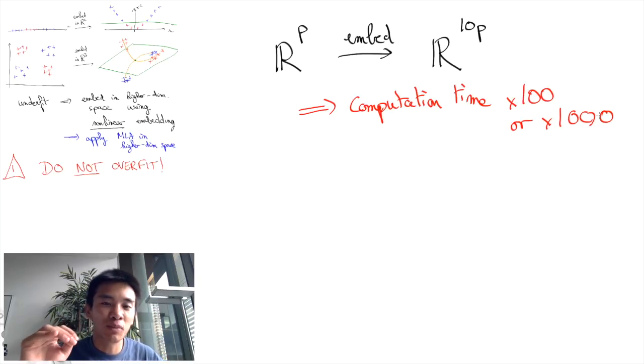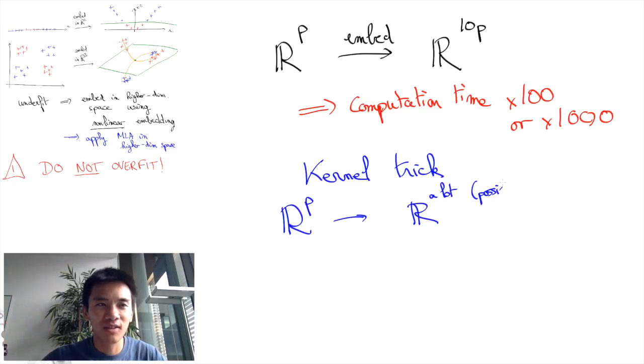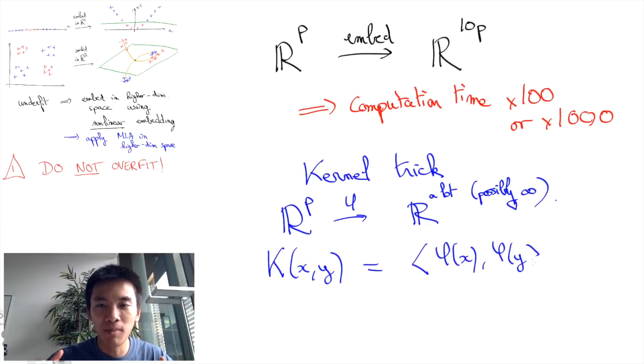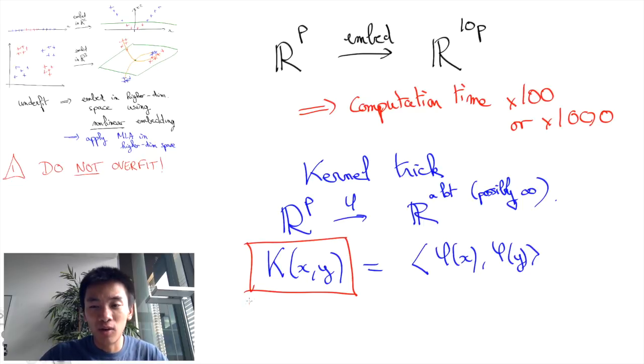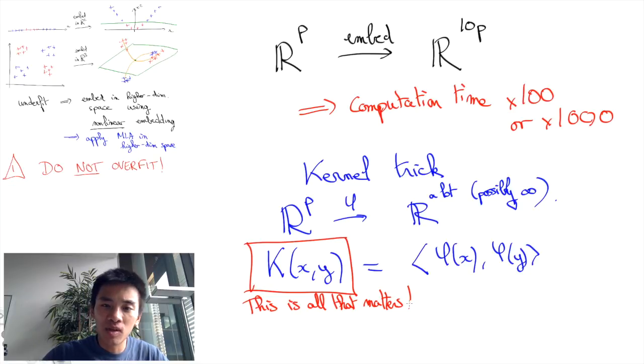Instead of embedding your feature space into a higher dimensional space, the kernel trick will embed in a possibly infinite dimensional Hilbert space. But crucially, it turns out that how this embedding goes and what the scalar product in this Hilbert space is do not really matter. All that really matters for machine learning algorithms are the scalar products between the embedded points, which are some quantities k of x1 and x2 for two points x1 and x2 of the original feature space.